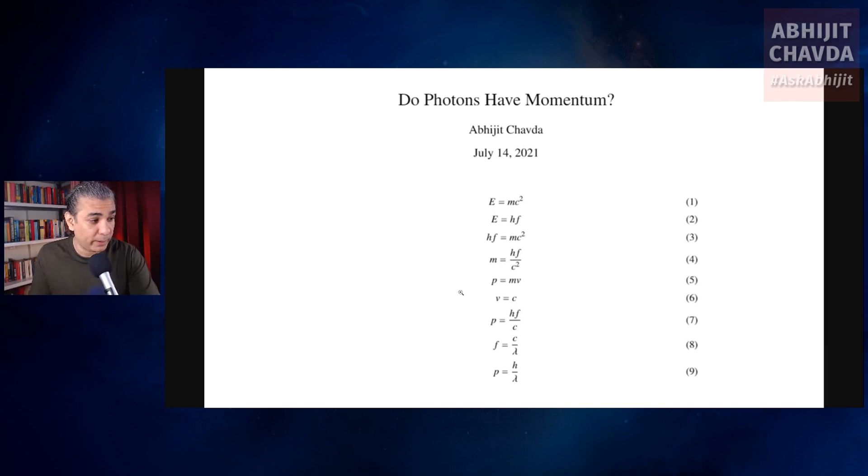Now, as you said, the equation of momentum in classical physics is p equals mv, where v is the velocity of the particle. In the case of the photon, v, the speed or velocity is the speed of light. So we put v equals c. And by combining these equations, we get p equals hf by c.